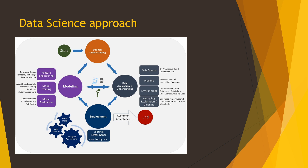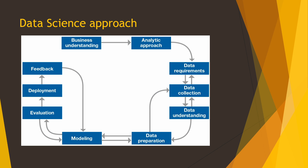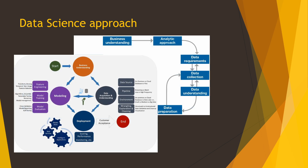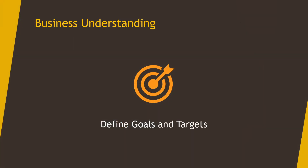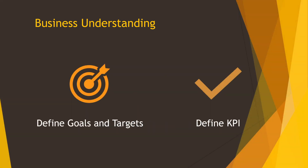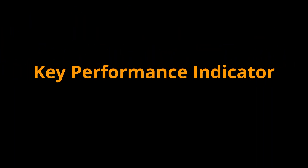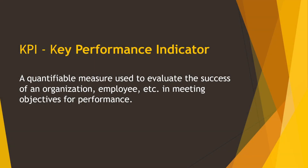If you try to search in Google about the data science approach, you will find something like this or this. The pictures show the steps which we need to take if you want to follow the data science approach. The first block is always business understanding. In this phase of our project, we need to define our goals and our KPIs. KPI is a Key Performance Indicator.